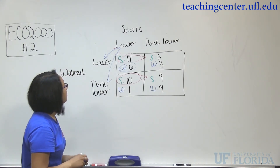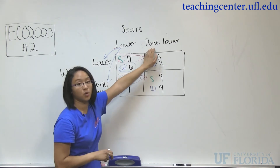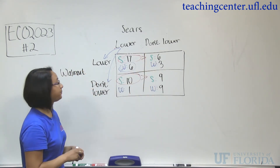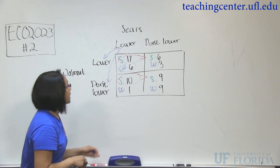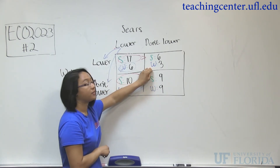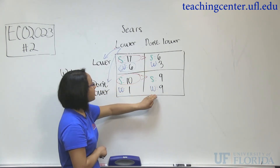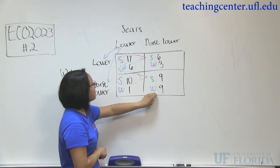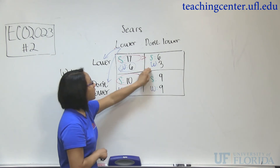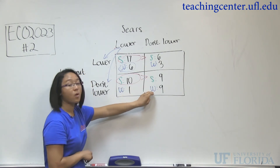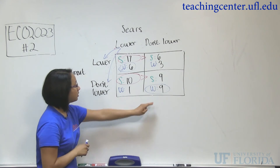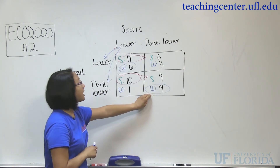Now say we see that Sears doesn't lower their prices. We need to decide: are we going to lower or not lower? If we lower, Walmart will make a profit of 3, which is less than making a profit of 9 if we don't lower. So since 9 is greater than 3, we're going to want to make a profit of 9 — we're going to not lower our prices.